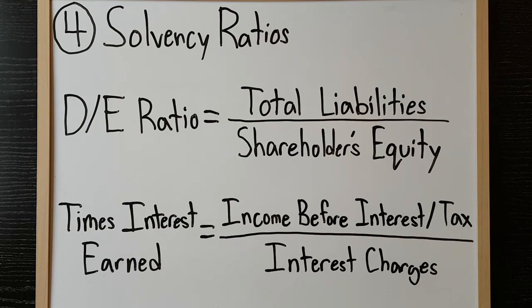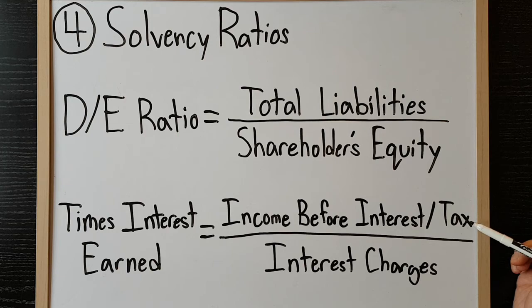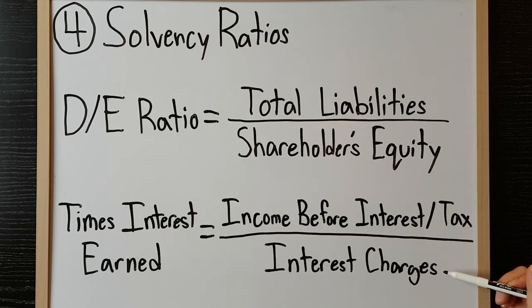Another common solvency ratio is times interest earned, which measures a company's ability to meet its interest obligations. It is calculated as income before interest charges and taxes divided by interest charges.